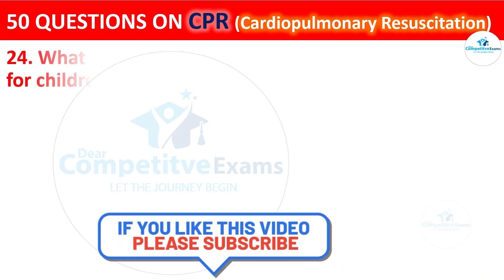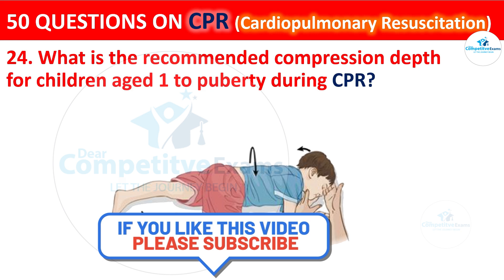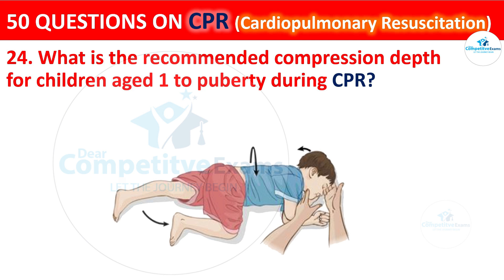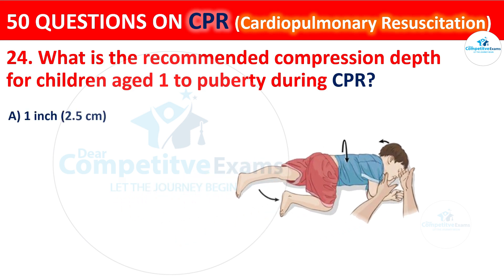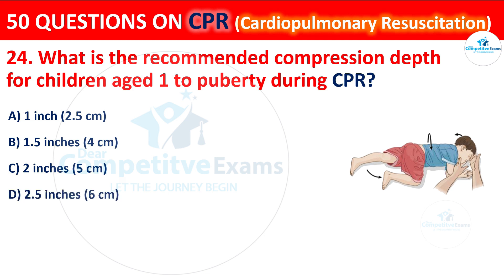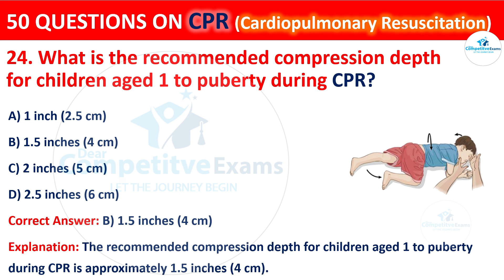Question 24: What is the recommended compression depth for children aged 1 to puberty during CPR? Your options are: 1 inch (2.5 cm), 1.5 inches (4 cm), 2 inches (5 cm), or 2.5 inches (6 cm). The correct answer is B: 1.5 inches (4 cm). The recommended compression depth for children aged 1 to puberty during CPR is approximately 1.5 inches, that is 4 cm.